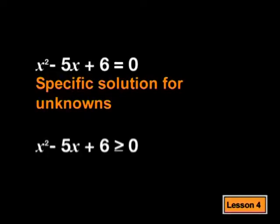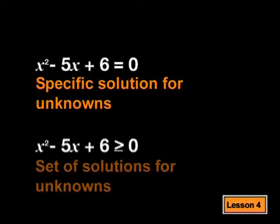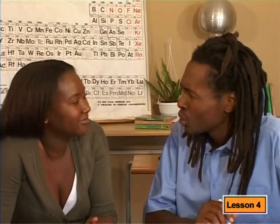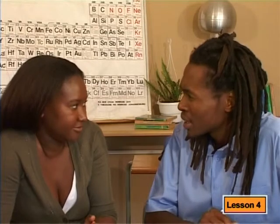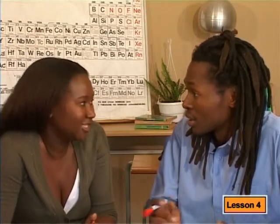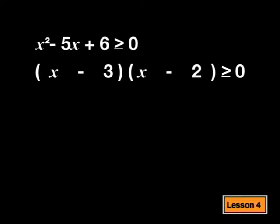Let's first talk about the difference between an equation and an inequality. When we are solving an equation, we are looking for a specific solution for the unknowns. When we are solving an inequality, we are looking for the set of solutions which satisfies the inequality. So what you are saying is, in an inequality, there's a whole range of answers. Yes, that's right. In a quadratic inequality, we need to find the set of solutions that make the inequality true. So in this example, we need to find the set of solutions that will make x minus 3 times x minus 2 greater than or equal to 0.